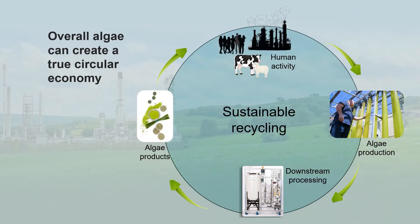This slide exemplifies that philosophy, showing how algae can be used to form a true circular economy. You've got human activities at the top — whether domestic, industrial, or agricultural — feeding waste into an algal production process. With a sufficient downstream process, we can then harvest products from those algae that we can use in our everyday activities, which will then generate waste, and you can see how the cycle develops.